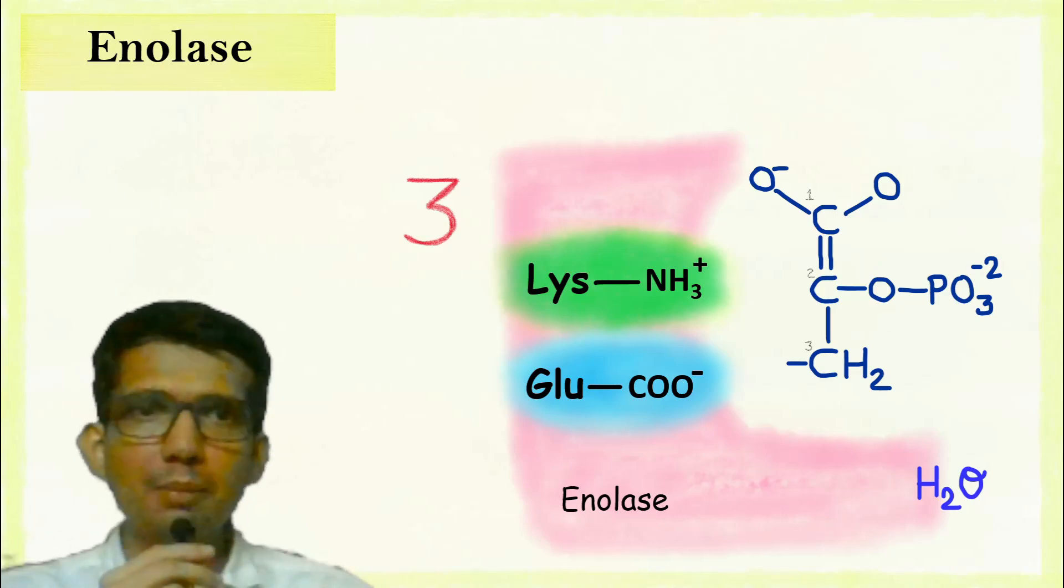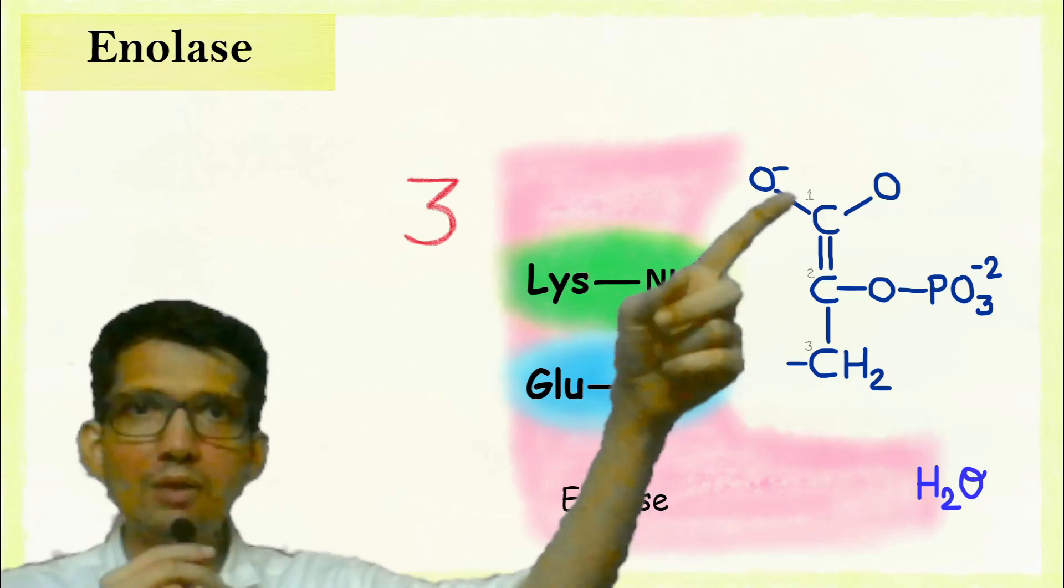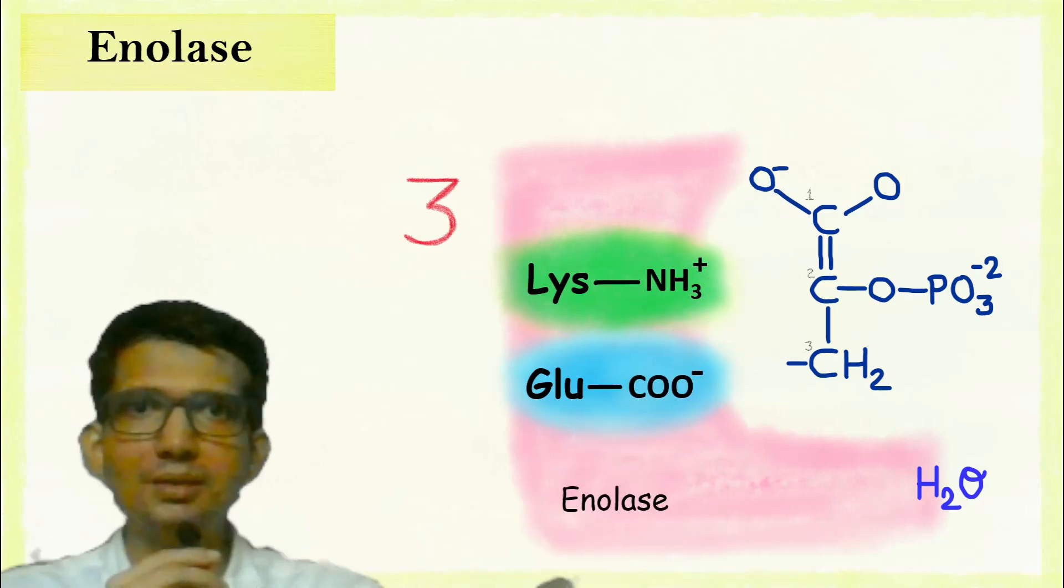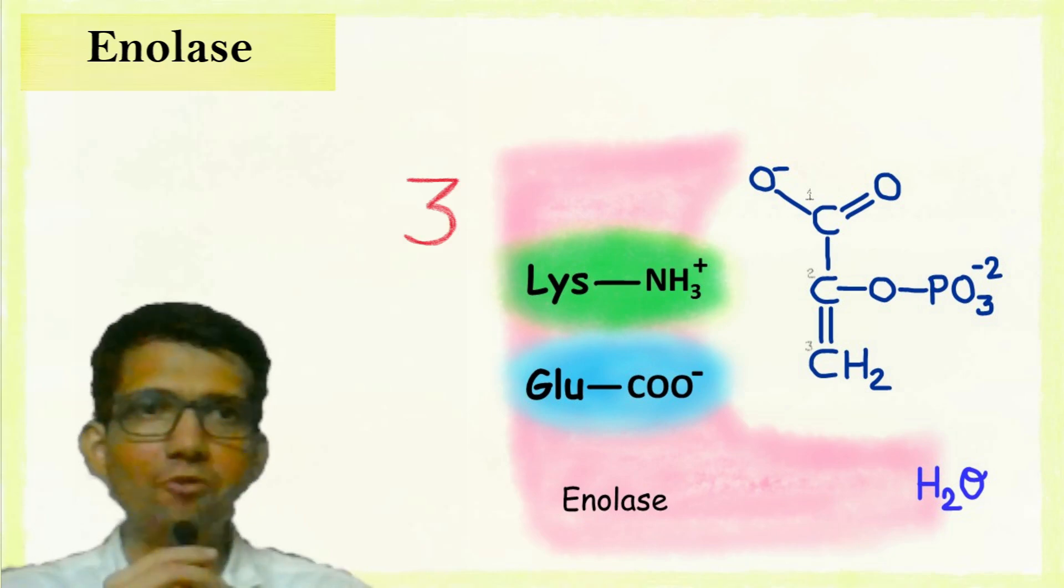Now, the double bond which is in between C1 and C2 shifts between C2 and C3. This results in formation of phosphoenol pyruvate.